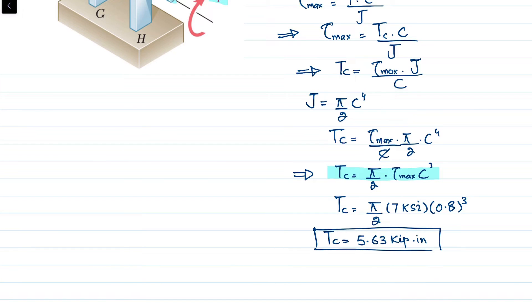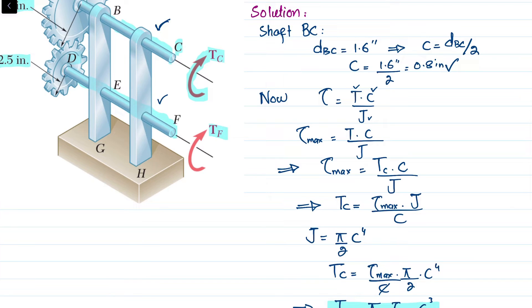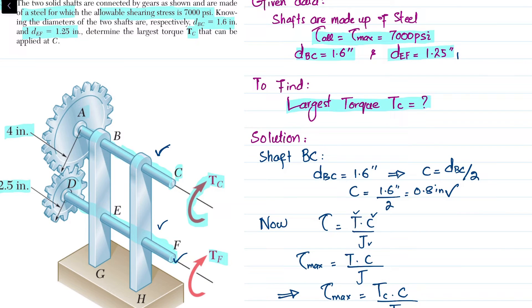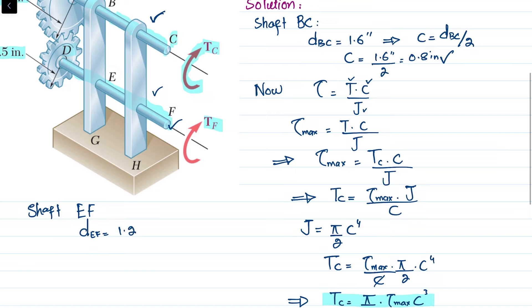Now we move to shaft EF. The diameter of EF is given as 1.25 inch, so the radius is equal to d_EF / 2 = 1.25 / 2 = 0.625 inch.